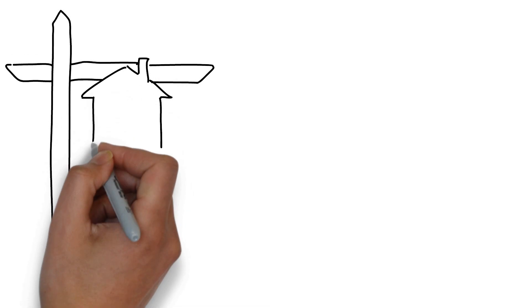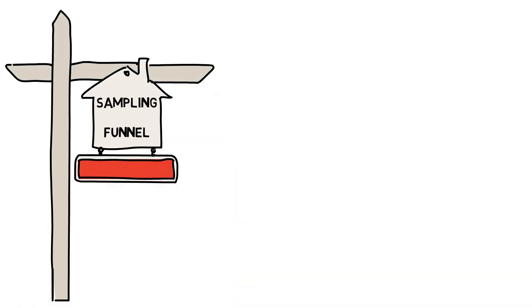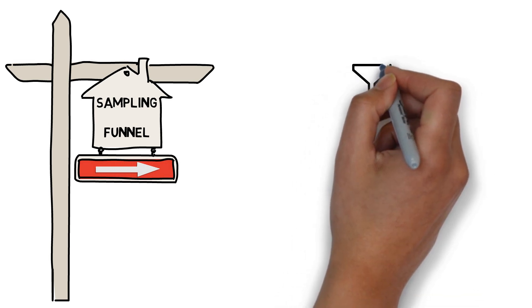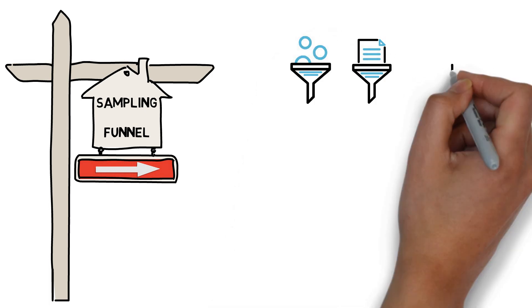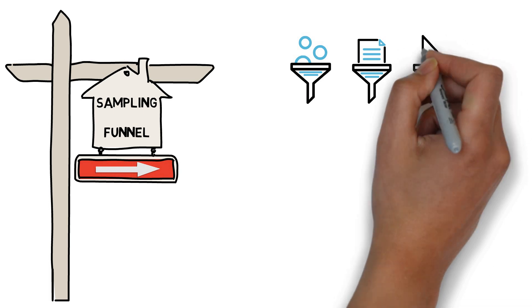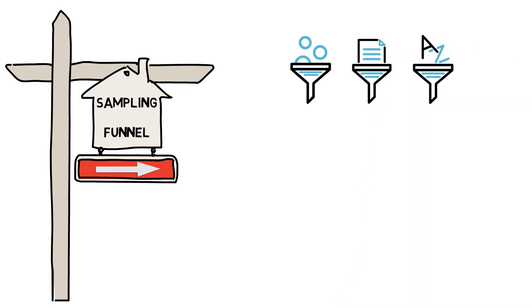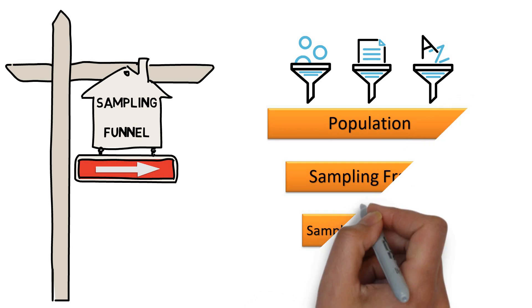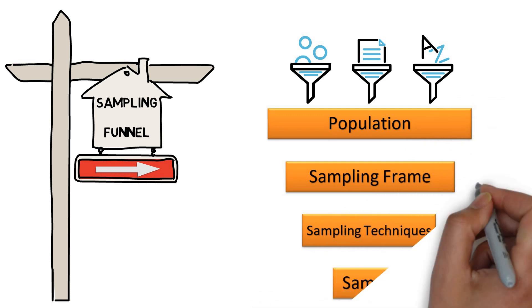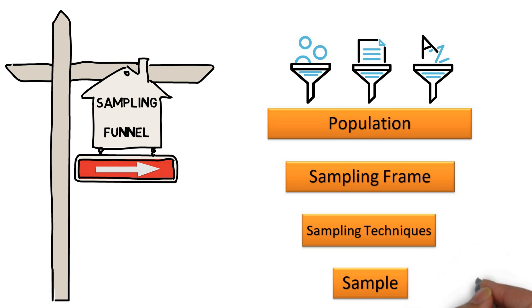Now we will see what is the sampling funnel and how it works. So whatever kind of data we collect — whether it is structured data like a tabular data which has rows and columns, or unstructured data like audio, image or video files, or semi-structured data like JSON files — for any research, it has already gone through all four steps that we are going to discuss in this sampling funnel. And these are: determining population, selecting a sampling frame, choosing the best sampling techniques including determining sample size, and finally getting samples from that population.